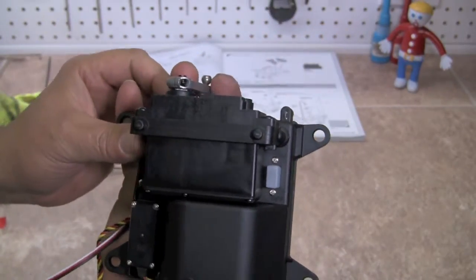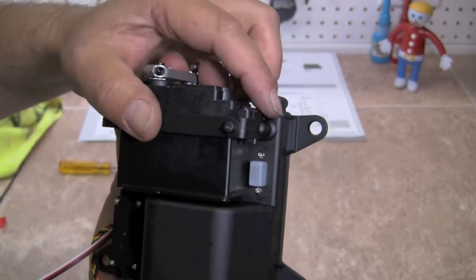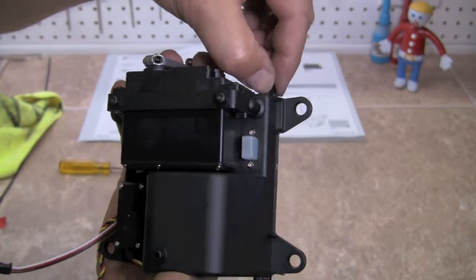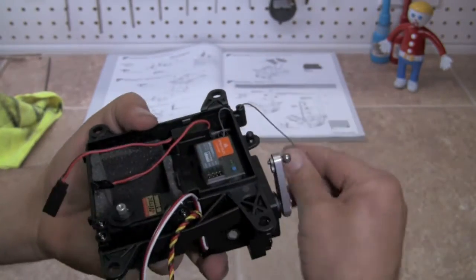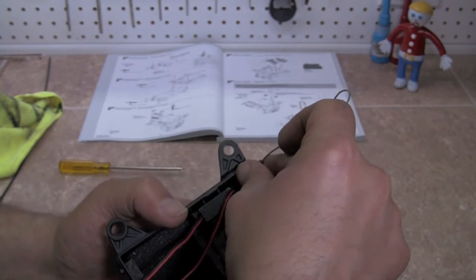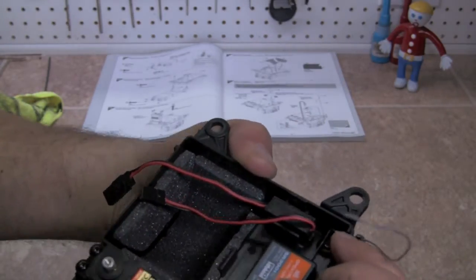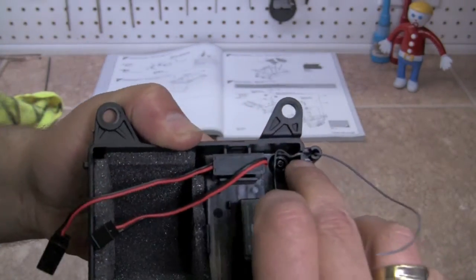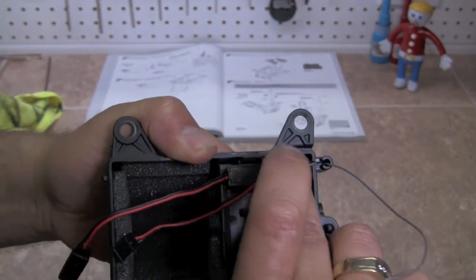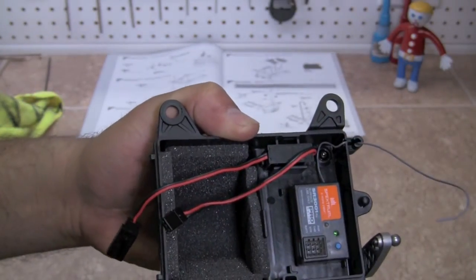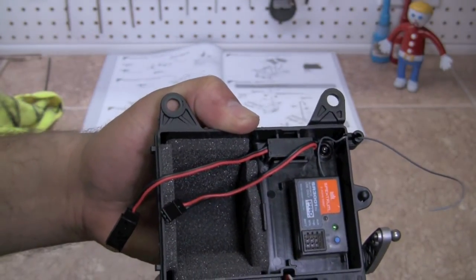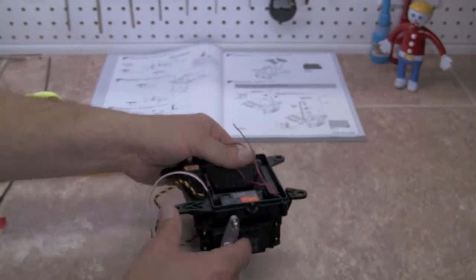You can see how it loops around here. There's also a little notch in the radio box here and that's where your antenna wire is going to sit through so it doesn't get caught on the lid when you close it.